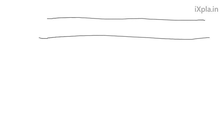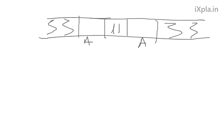When muscle contraction happens, different zones are affected. The bands don't actually shorten — opposing sarcomeres slide past each other, so it looks like they shorten. It's important to know which bands appear to shorten and which stay the same exact length.